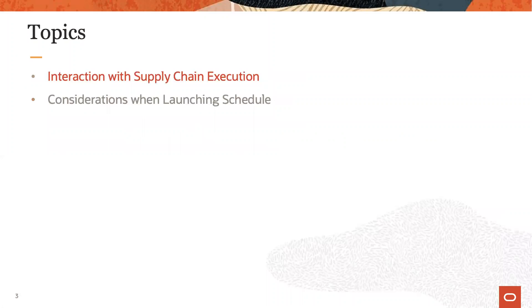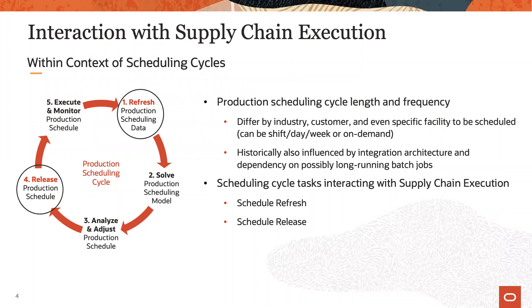Let's start with the first topic: the interaction of production scheduling with supply chain execution. Within the production scheduling cycle, the schedule refresh and schedule release are the tasks where production scheduling interacts with the execution system.